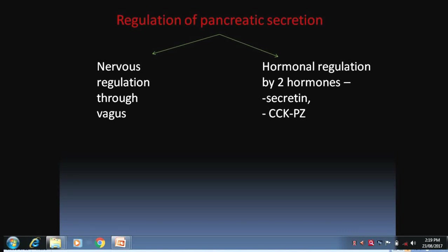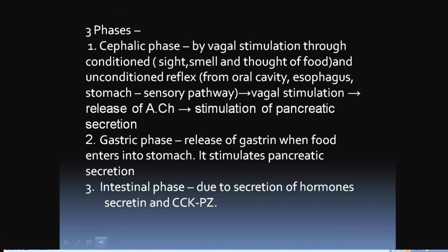Regulation of pancreatic secretion is done by nervous regulation as well as hormonal regulation. The nervous regulation is done through the vagus nerve, while hormonal regulation is done by two hormones: secretin and CCK, i.e., cholecystokinin.